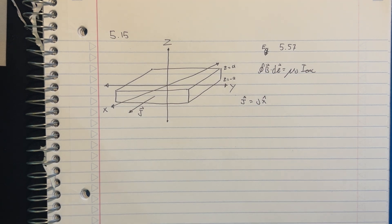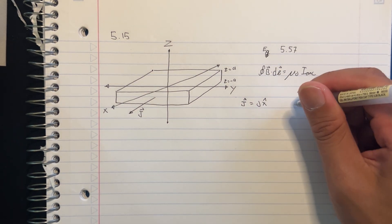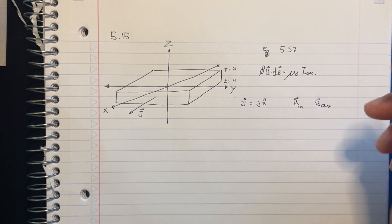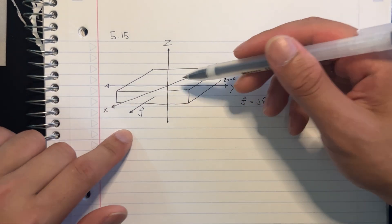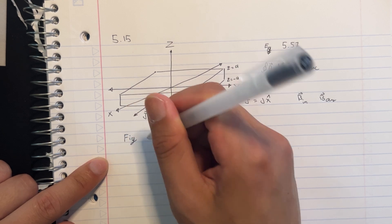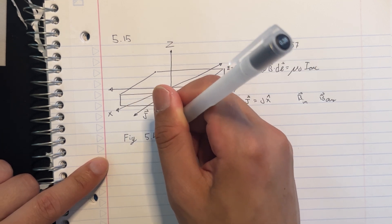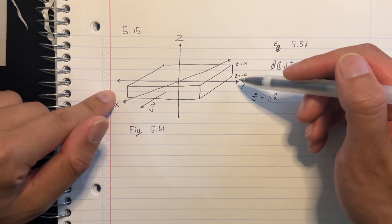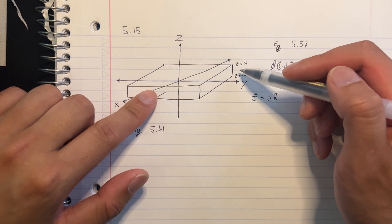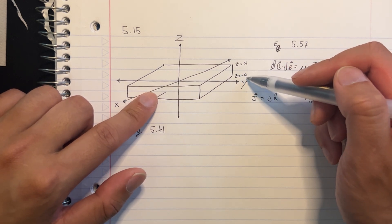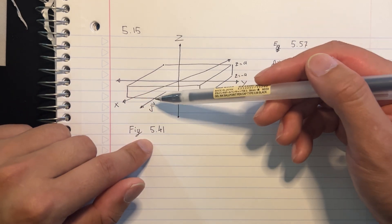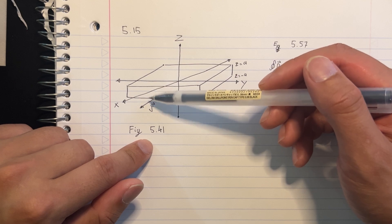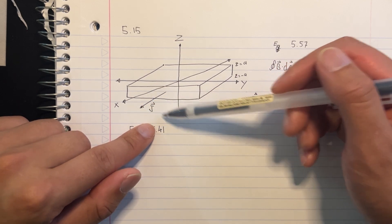We have our givens and we know what we need to find: the magnetic field inside and outside the slab. Right here I have figure 5.41 — it's horribly drawn, but if you have the book you can look at it there. I have it drawn here as a small reference. It's a thick slab with a two-way thickness going from z equals negative a to z equals positive a, and the volume current J is going in the x direction.